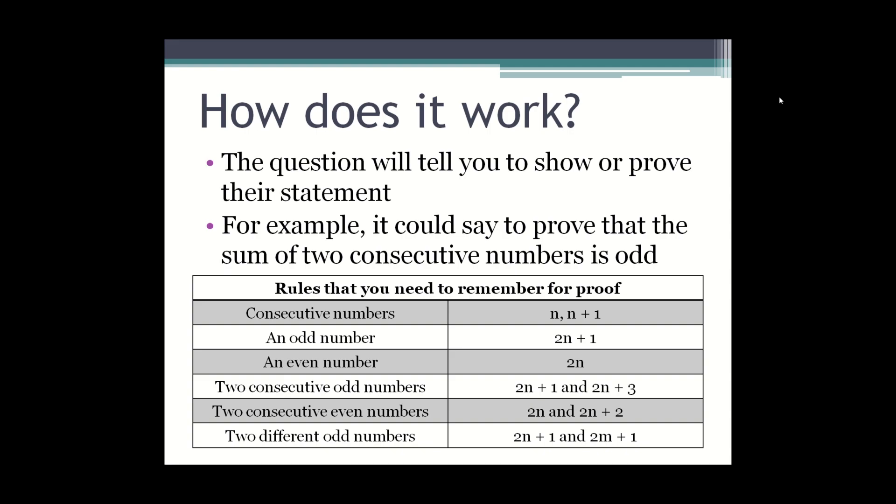Two consecutive odd numbers, like 3 and 5, you'll write them as 2n plus 1 and 2n plus 3. Two consecutive even numbers like 2 and 4, you'll write as 2n and 2n plus 2.